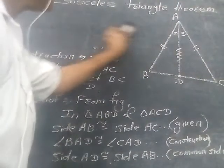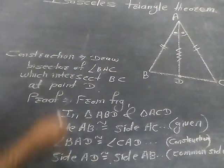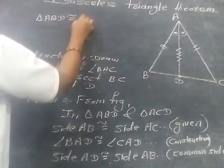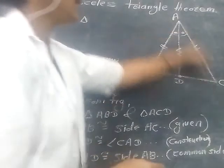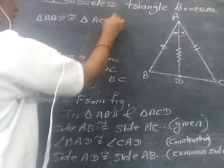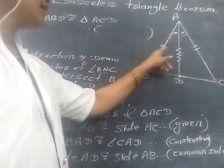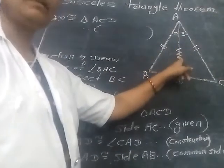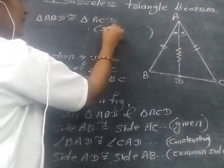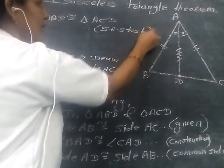Now, three corresponding parts of one triangle are congruent to three corresponding parts of the second triangle. So triangle ABD is congruent to triangle ACD. The property used here is side-angle-side, that is the SAS test. So by using the SAS test, these two triangles are congruent.